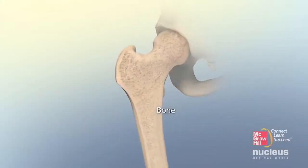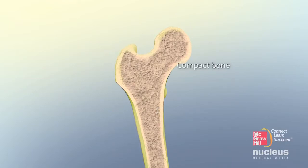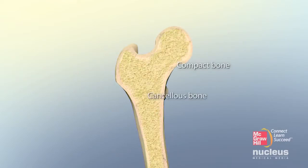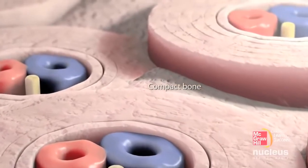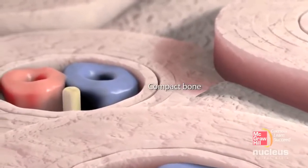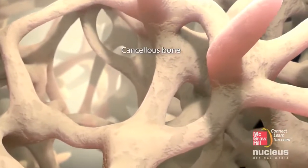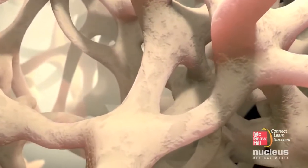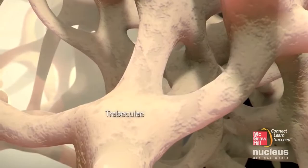Bone consists of a dense, compact layer and a spongy, cancellous structure. While compact bone forms an organized outer shell, cancellous bone consists of thin, interlocking plates called trabeculae.